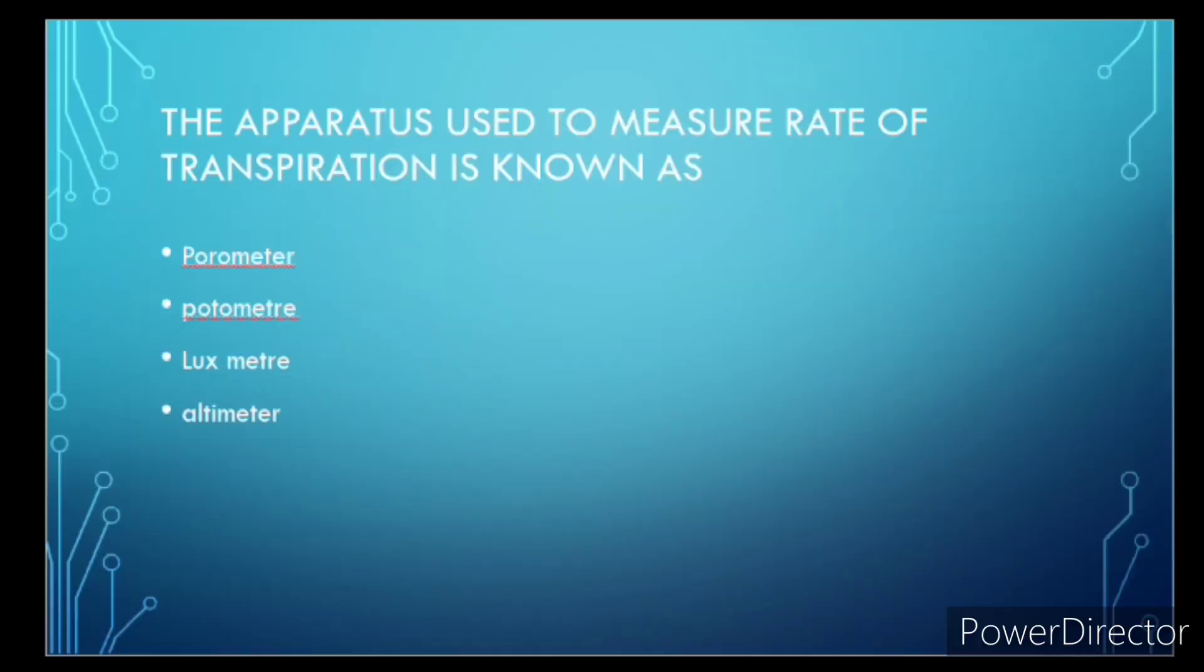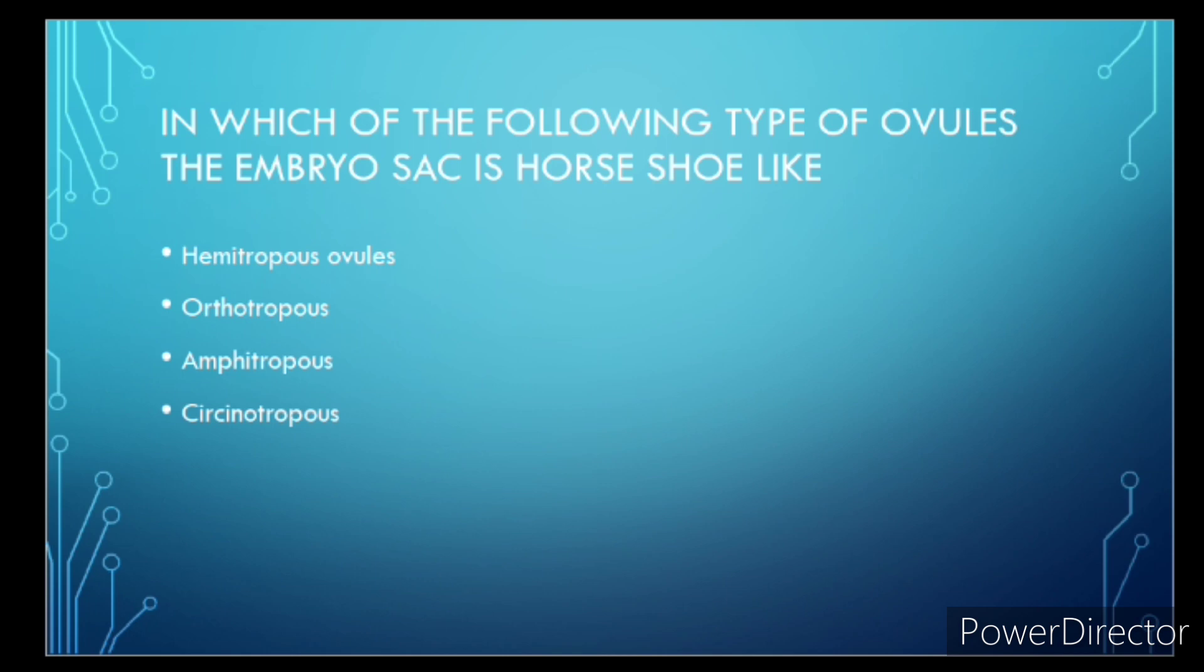The apparatus used to measure rate of transpiration is known as? The correct answer is potometer. Next question, in which of the following type of ovules the embryo sac is horseshoe-like? The correct answer is amphitropous.